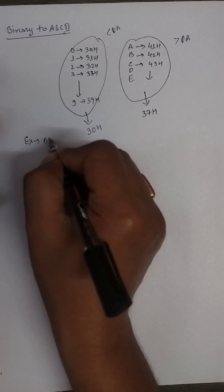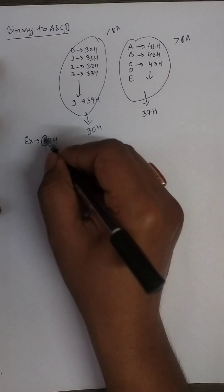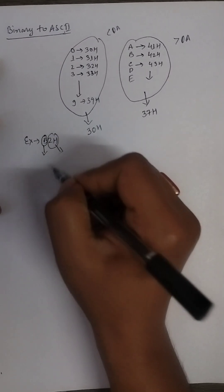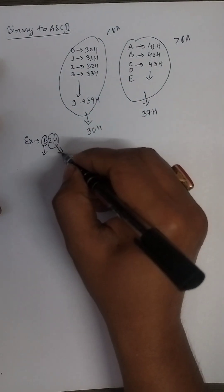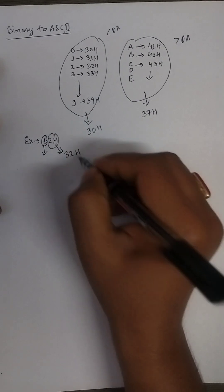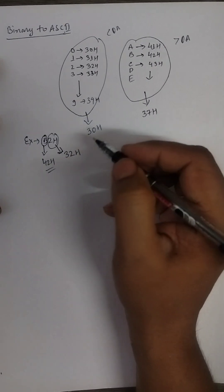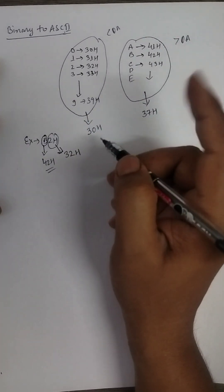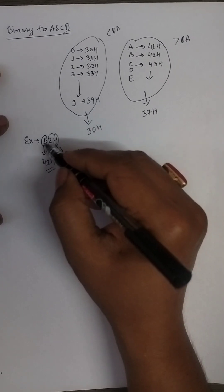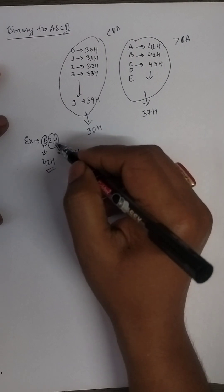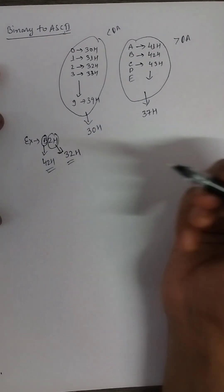Let us consider the example B2H. Here B has one ASCII code and 2 has another ASCII code. Using our concept, 2 represents 32H in ASCII code and B represents 42H in ASCII code. So you have to write a program to convert this binary number into ASCII. Converting B gives 42H and converting 2 gives 32H.